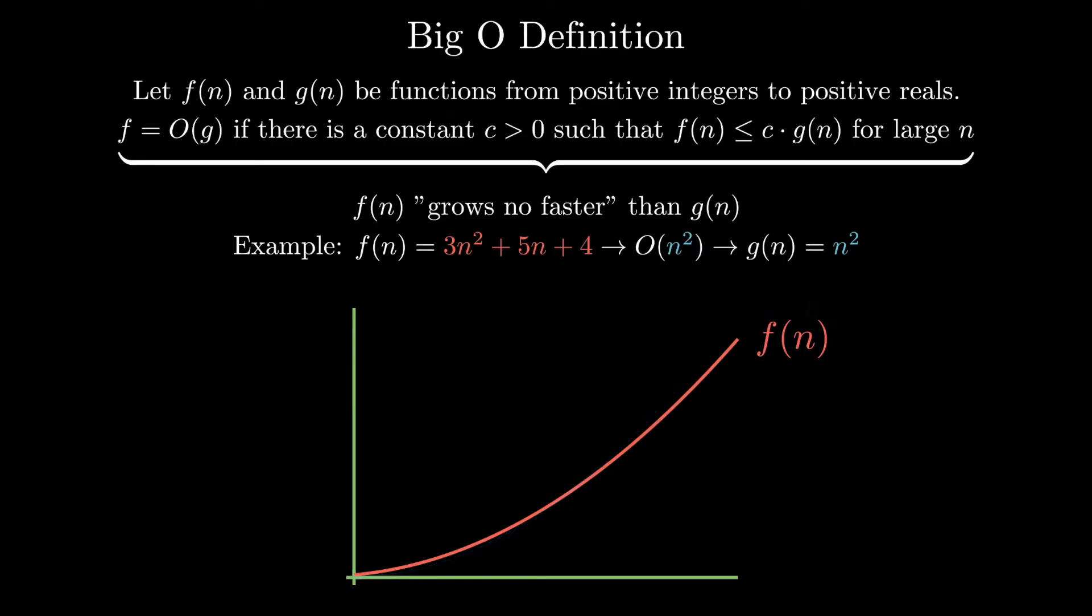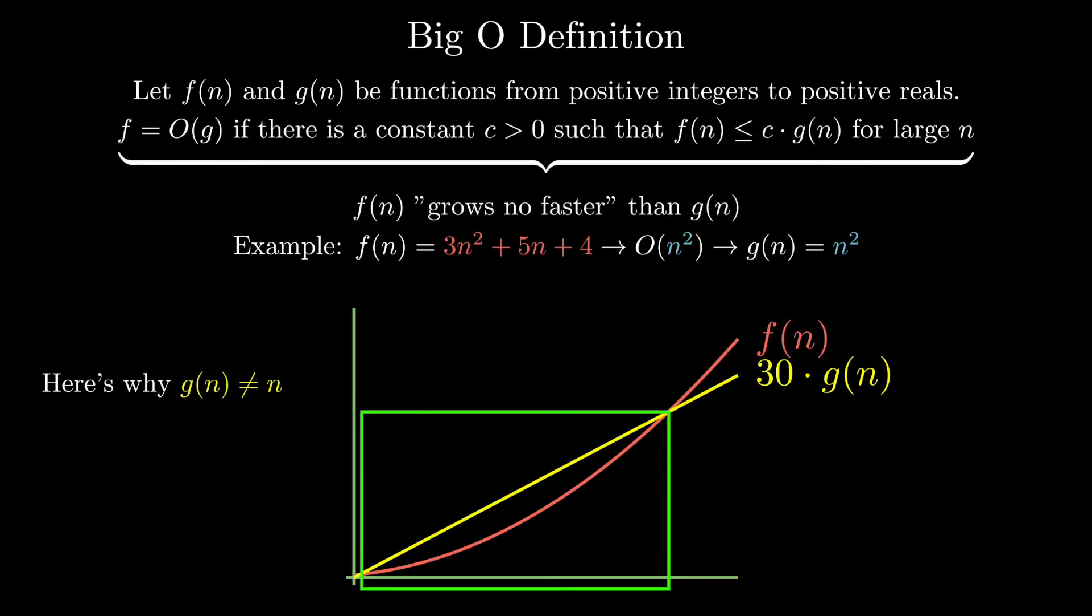And this also shows that the Big O notation for this could never be something like O of n since there is no constant that exists in the world that would make c times n greater than our function f of n for large enough n. The large enough n part of this definition is really key here. For example, when c is equal to 30, even though it might look like c times g of n is greater than f of n for a section of the graph, there will eventually be a large enough n where this is not true.